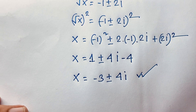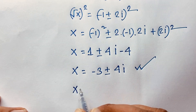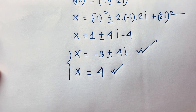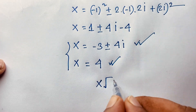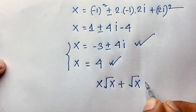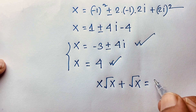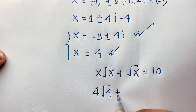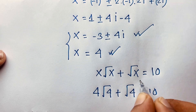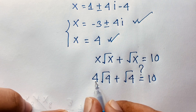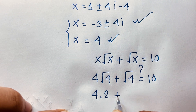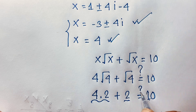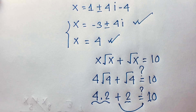So x equals 4 is our real solution. Let's verify: substituting x equals 4 into x times square root x plus square root x equals 10. We get 4 times square root 4 plus square root 4, which is 4 times 2 plus 2, equals 8 plus 2, equals 10. Left-hand side equals right-hand side, confirming x equals 4 is correct.